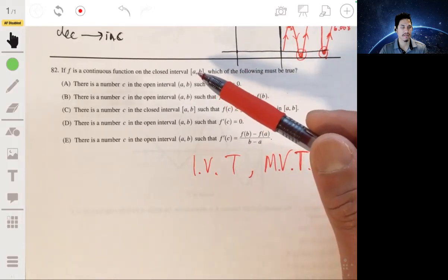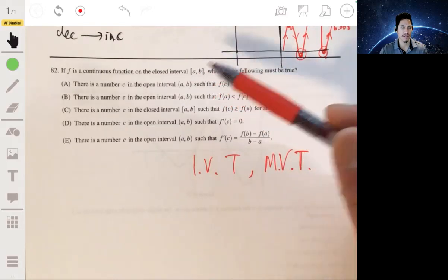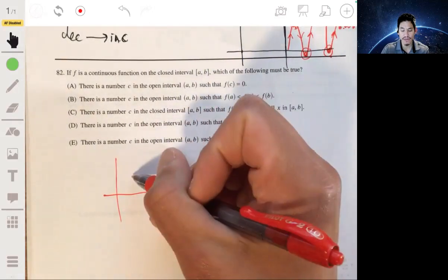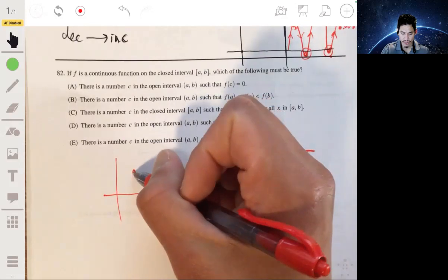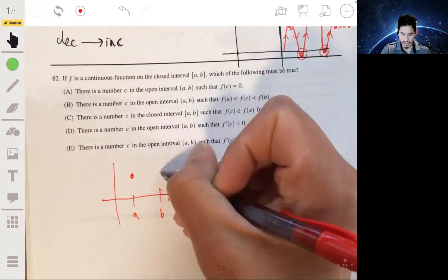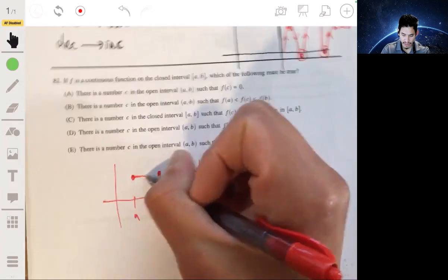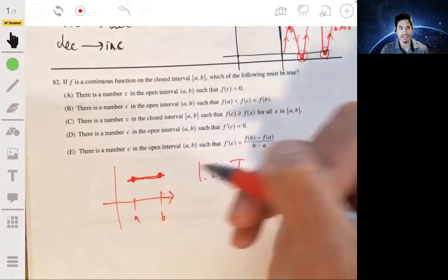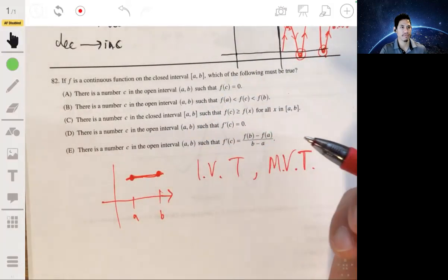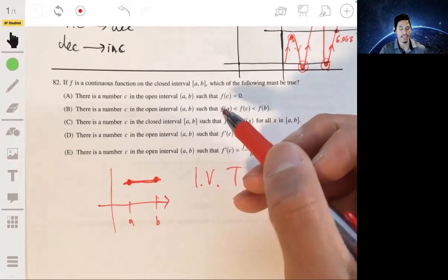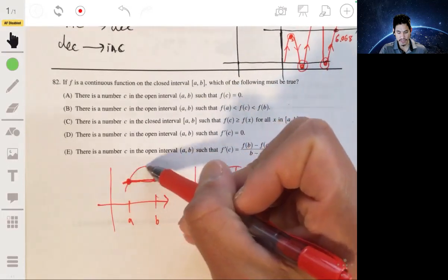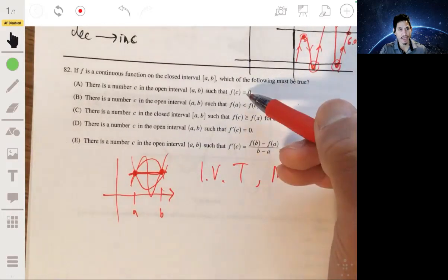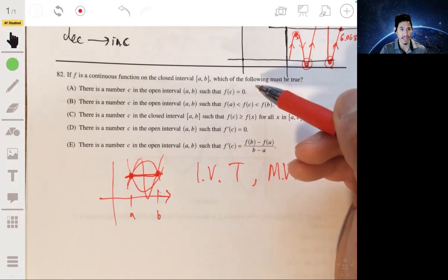Well, see, all it says is that F is a continuous function on this closed interval. All that means is that it has to connect. We don't know if it's positive. We don't know if it's negative. We don't even know if it's increasing or decreasing. For all we know, if that's A and that's B, it could be a horizontal line. That's possible because it doesn't even say it's increasing or decreasing. All the values could be the same on the interval. Now, this is just one possibility. It could do this, it could do this, it could oscillate. So it's not going to be A necessarily.